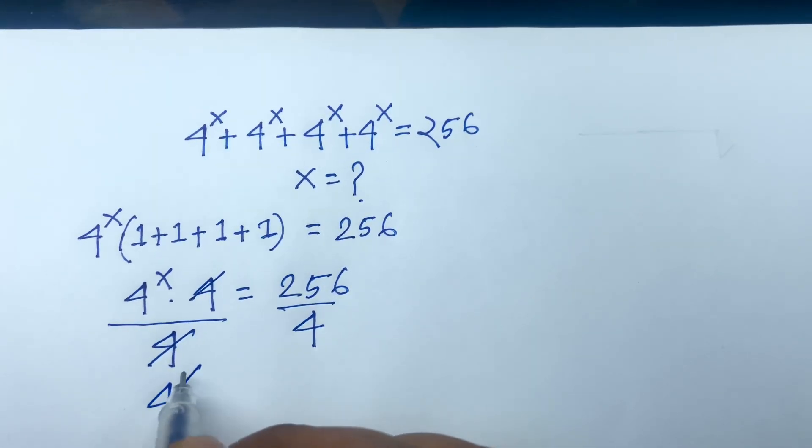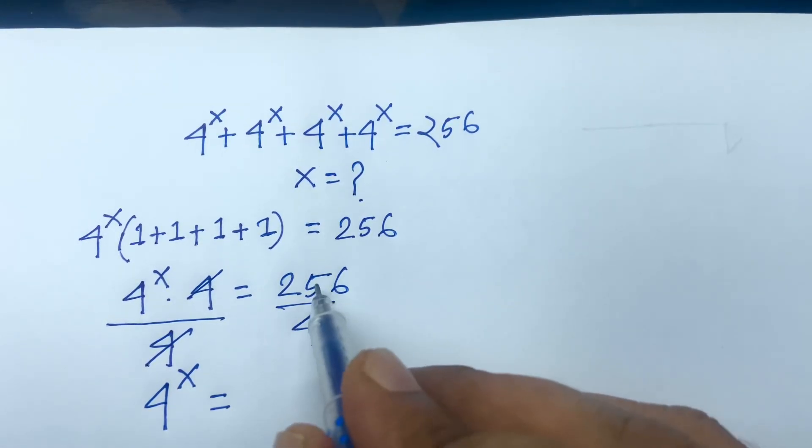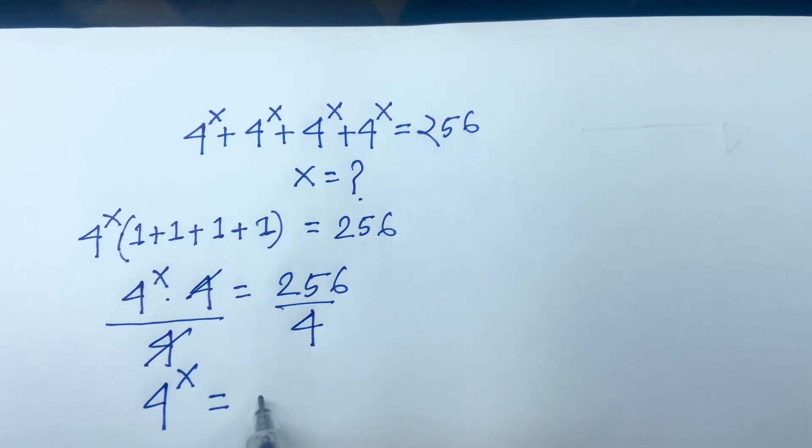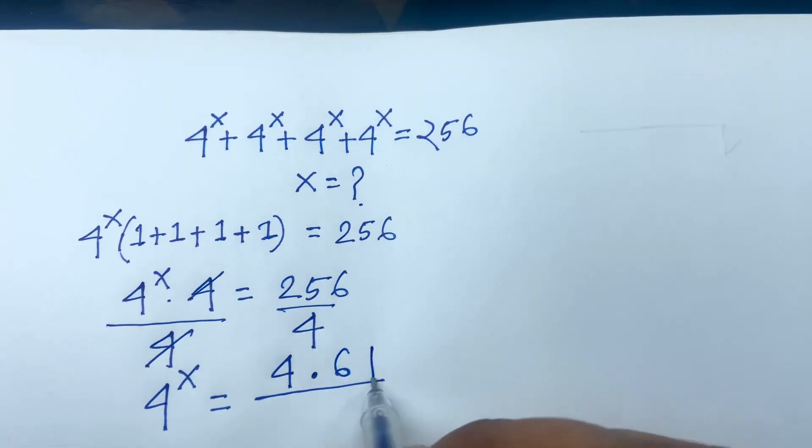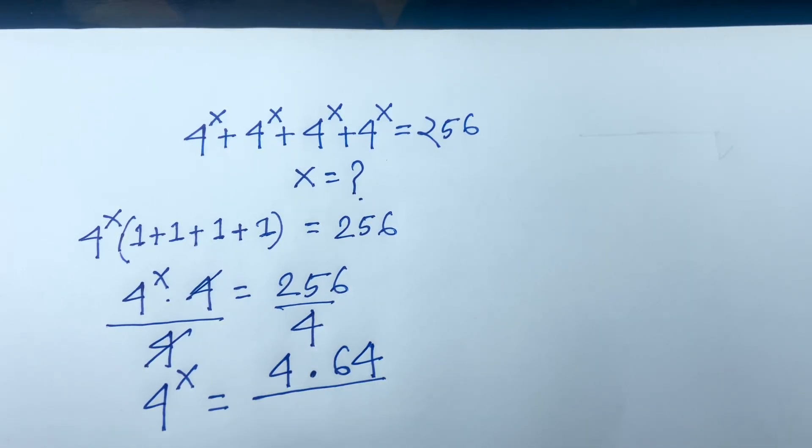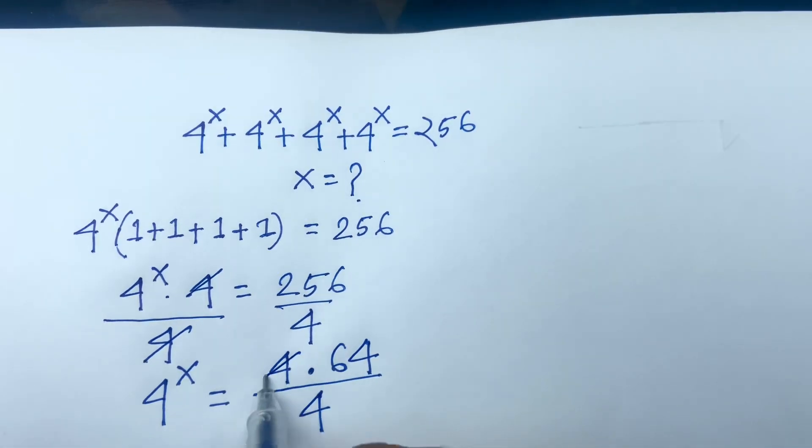4 to the power x equals 256 divided by 4, which is 64.